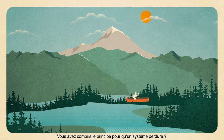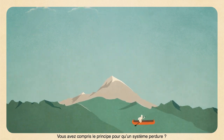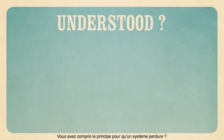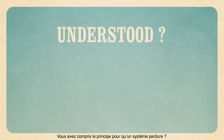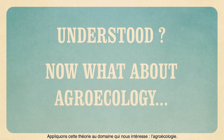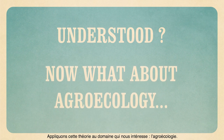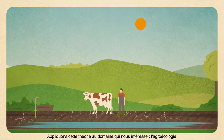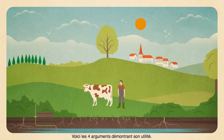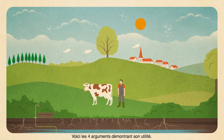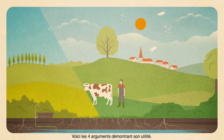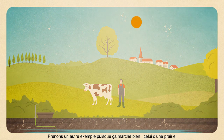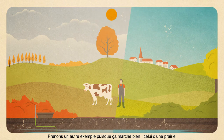So, did you understand the principle by which a system persists? Let's apply this theory to the field we're interested in: agroecology. Here are the four arguments that demonstrate its usefulness. Let's take another example, since it fits well.